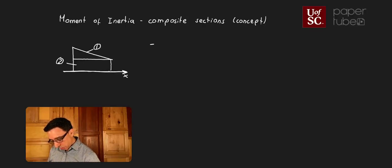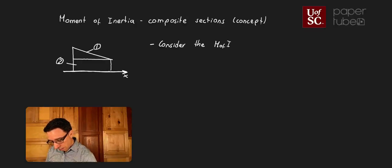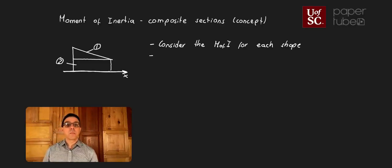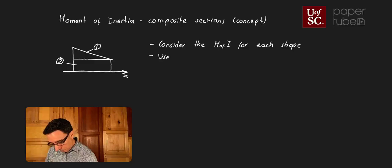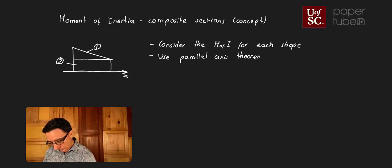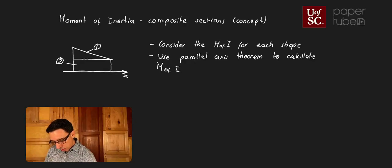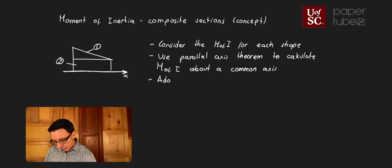In a nutshell, what we want to do is consider the moment of inertia for each shape, use the parallel axis theorem to calculate it about a common axis, and then add all of those moments of inertia together. The key part is using that parallel axis theorem.